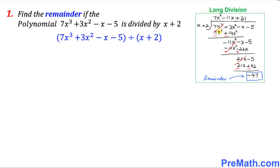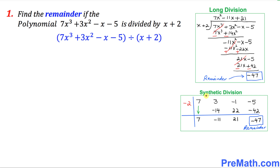The first option is long division. Here I simplified this problem and found out that the remainder is negative 47. The other method is synthetic division, as you can see here, and we also got the remainder as negative 47.